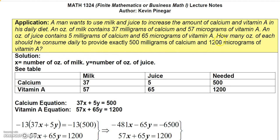Since it tells us what we're looking for, let X be the number of ounces of milk and Y be the number of ounces of juice he should consume. Looking at the table, we need 500 units of calcium. The milk gives 37 milligrams of calcium per ounce and the juice gives 5 milligrams of calcium per ounce. So 37X plus 5Y equals 500.